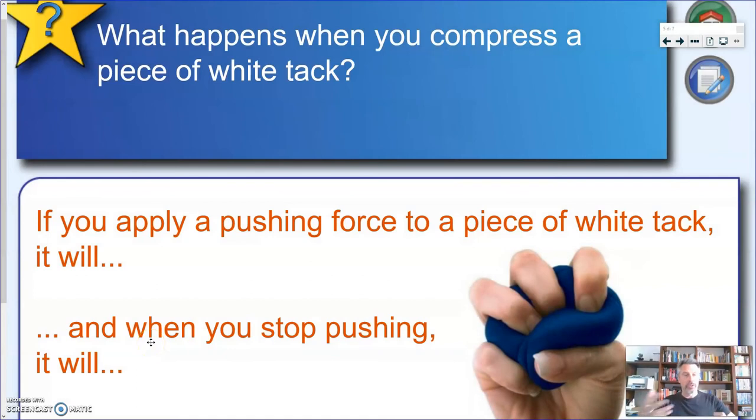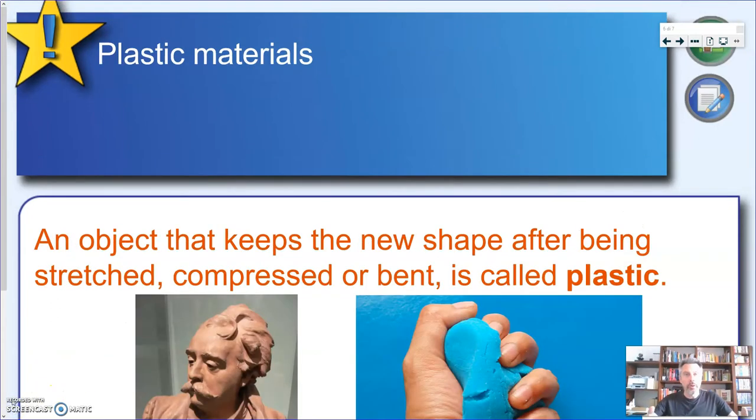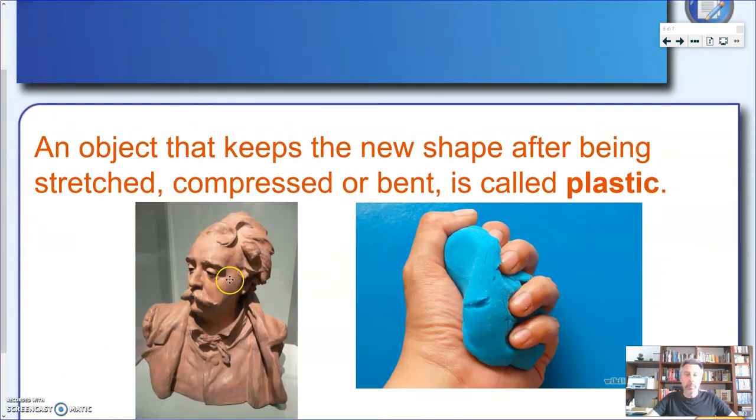So just to recap, if you have a piece of, in this case of white tack, but it's the same as for plasticine or clay, what will happen is it will change its shape but when you stop pushing it will not get back to its original shape, it will keep the new shape. So as I told you this is not an elastic behavior, so we need a new definition and the new definition is plastic. An object that keeps the new shape after being stretched compressed or bent is called plastic. That doesn't mean it's made of plastic, so now we have to be very careful. One thing is plastic behavior which is a behavior which is common among many types of materials including plastic, and another thing is the material plastic. And now you can see again two examples, we have clay used to make a statue and probably a piece of play-doh.